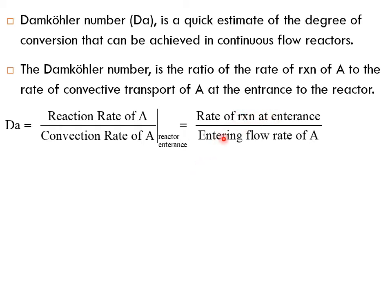Or the rate of reaction at the entrance divided by the entering flow rate of A. Simply, you write it as minus rA0 divided by the entering flow rate FA0. But because this will not be a dimensionless number, we multiply by V.